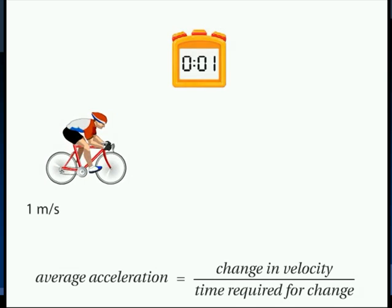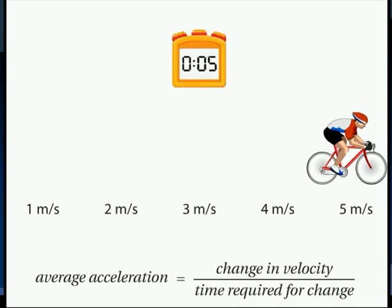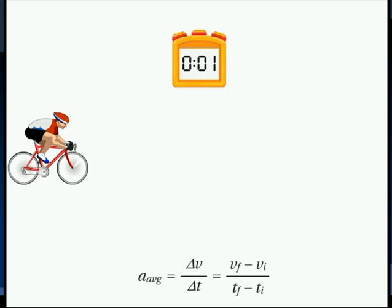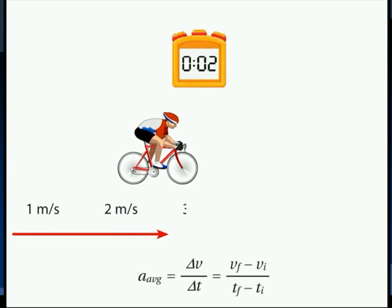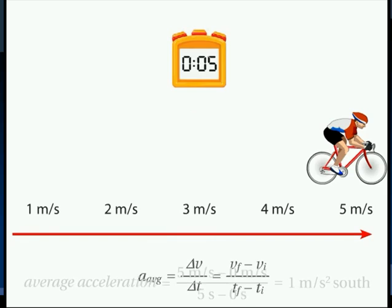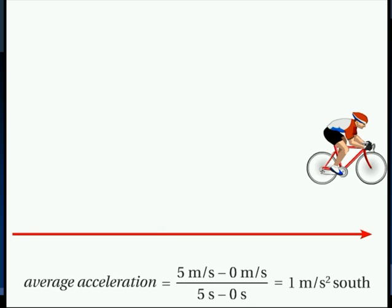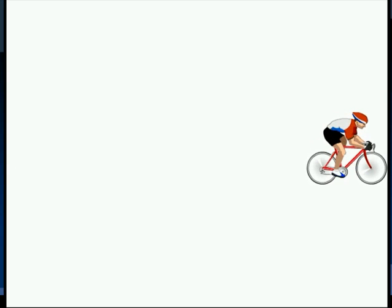An object changing speed is accelerating. The equation for acceleration is the change in velocity divided by the time required for the change. Acceleration can be calculated by knowing the initial and final velocities and the initial and final times. Like velocity, acceleration must also include direction. The velocity of this cyclist is increasing by 1 meter per second south each second, so his acceleration is expressed as 1 meter per second squared south.